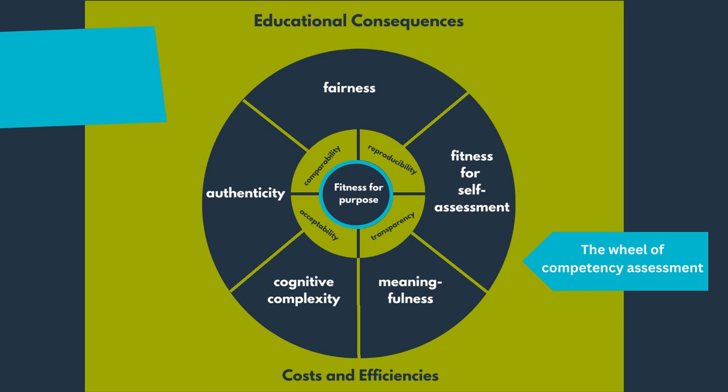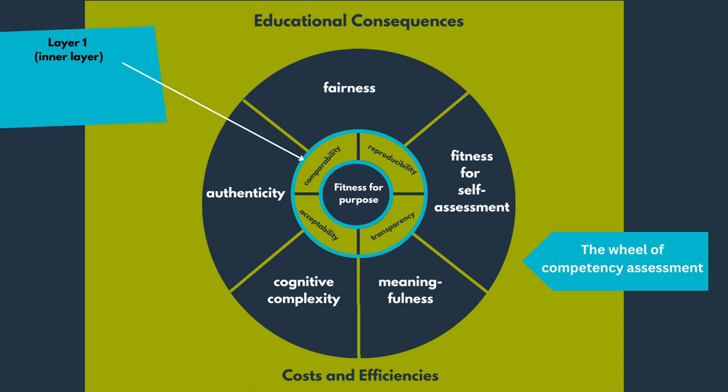The first, inside layer in the CAP wheel contains the more basic quality criteria, which are commonly used for the evaluation of all kinds of exams and are probably known to you. The criteria are represented in layers or circles to represent the idea that they are interrelated. In the wheel, the criteria for the inner layer tend to be prerequisite for the criteria in the outer layer. For example, a CAP cannot be fair — layer 2 — without being comparable and reproducible, and it must be transparent before it can be perceived as meaningful.